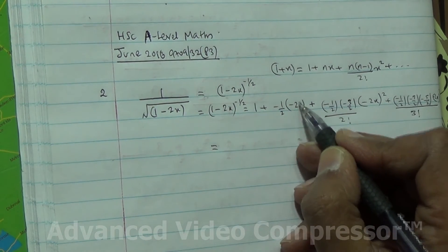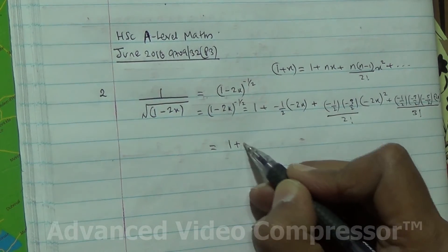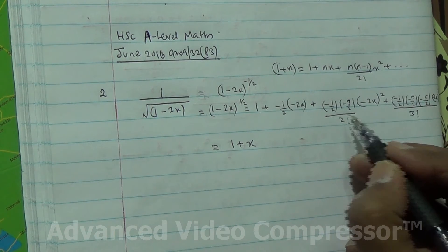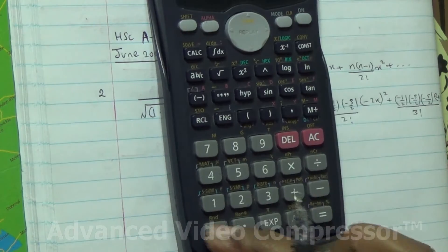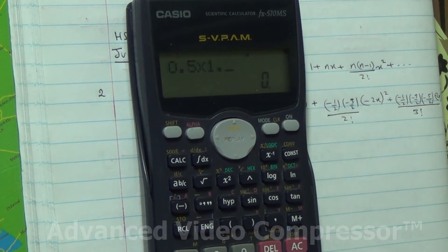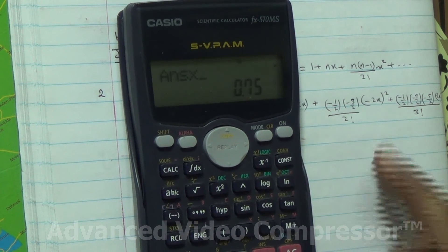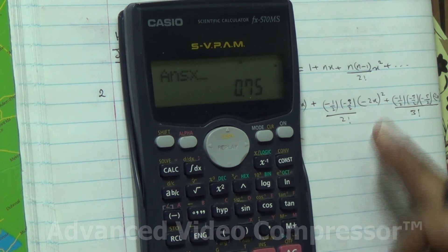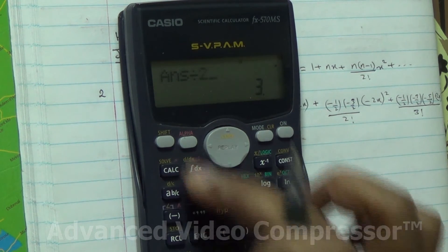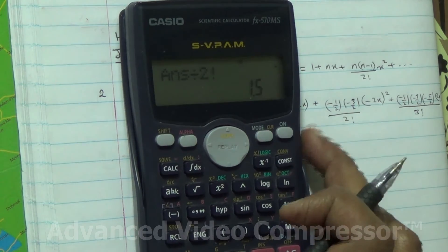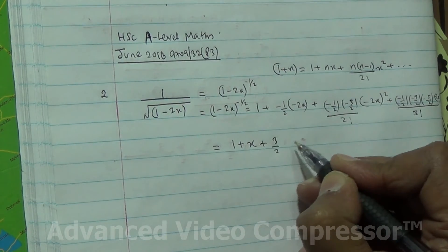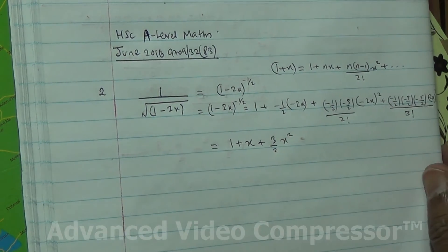So minus times minus becomes plus; 2 goes into 2 once, and 1 times x is x, so we get 1 plus x. For the x squared term, working it out on the calculator: 0.5 times 1.5, then multiply by minus 2 squared which is 4, divided by factorial 2 — that gives us 1.5, so plus 3 over 2 x squared.